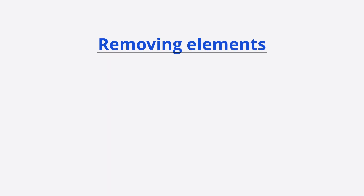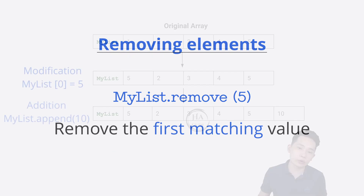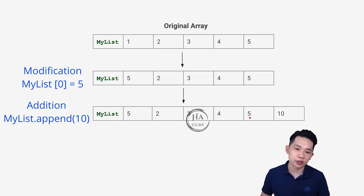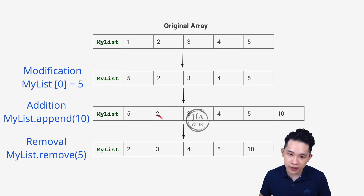The next operation will be removing elements. You can do my_list.remove(5), where you pass the value of the element. What happens is that it removes the first matching value. In this example, we have two 5s. Since it removes the first matching value, it removes the first 5. Therefore, the final result is my_list = [2, 3, 4, 5, 10], with the first element removed from the original array.